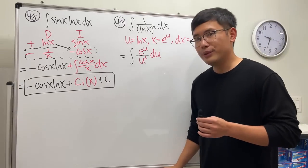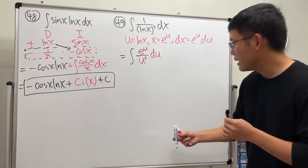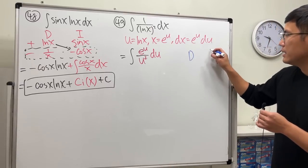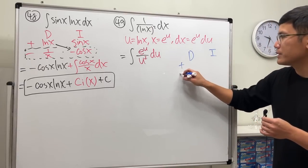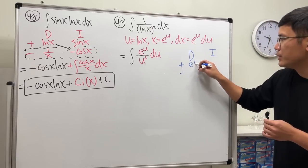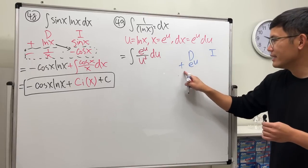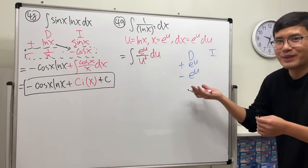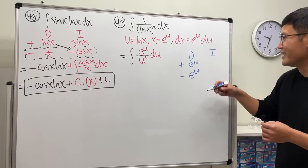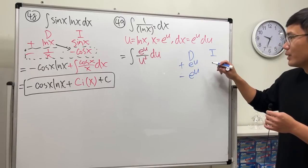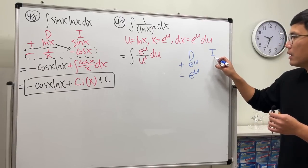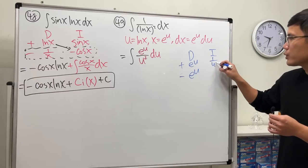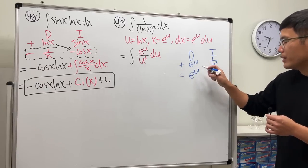And then now to do integration by parts, do u on the side, d and i. What I'm going to do is I will differentiate e to the u and then I'll just get e to the u. And then integrate, I will integrate one over u squared which is negative one over u.